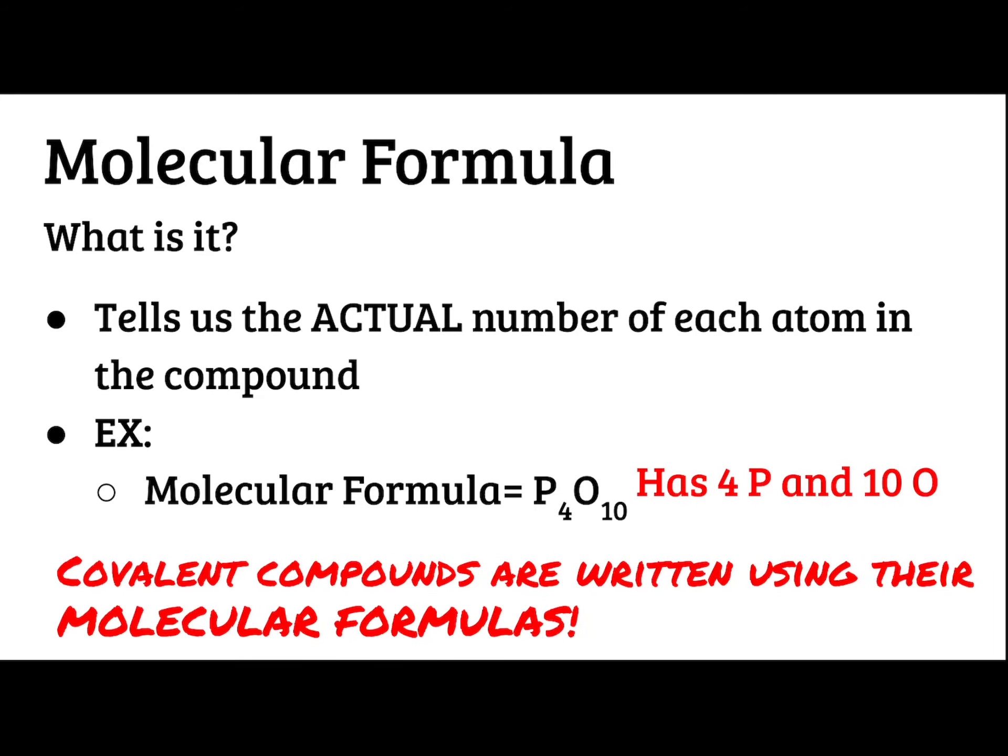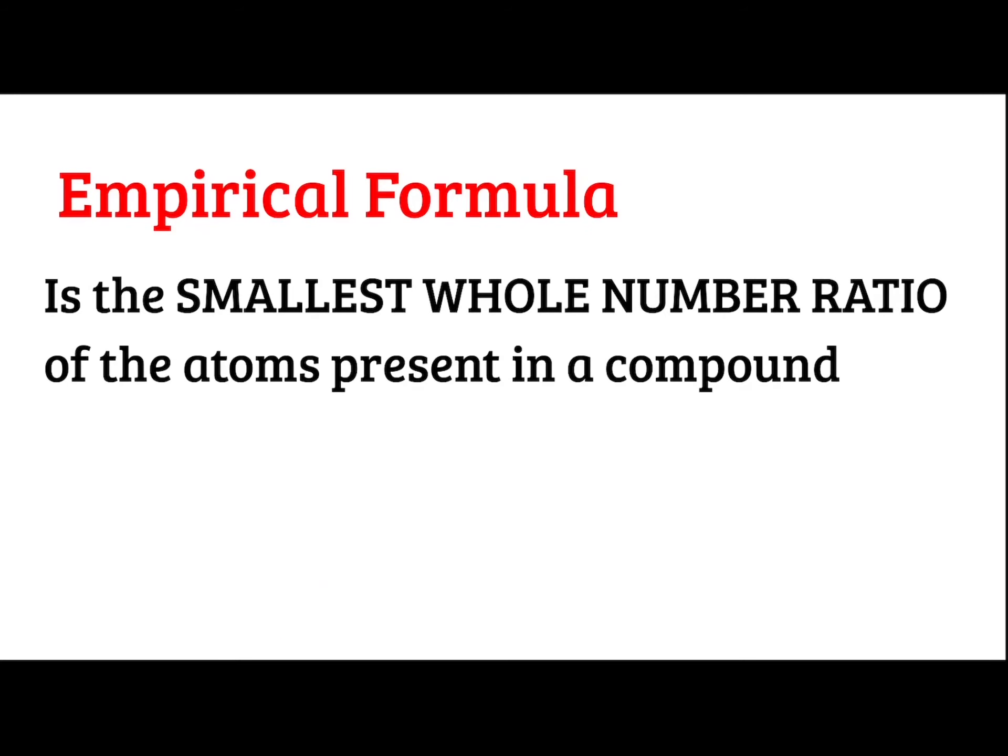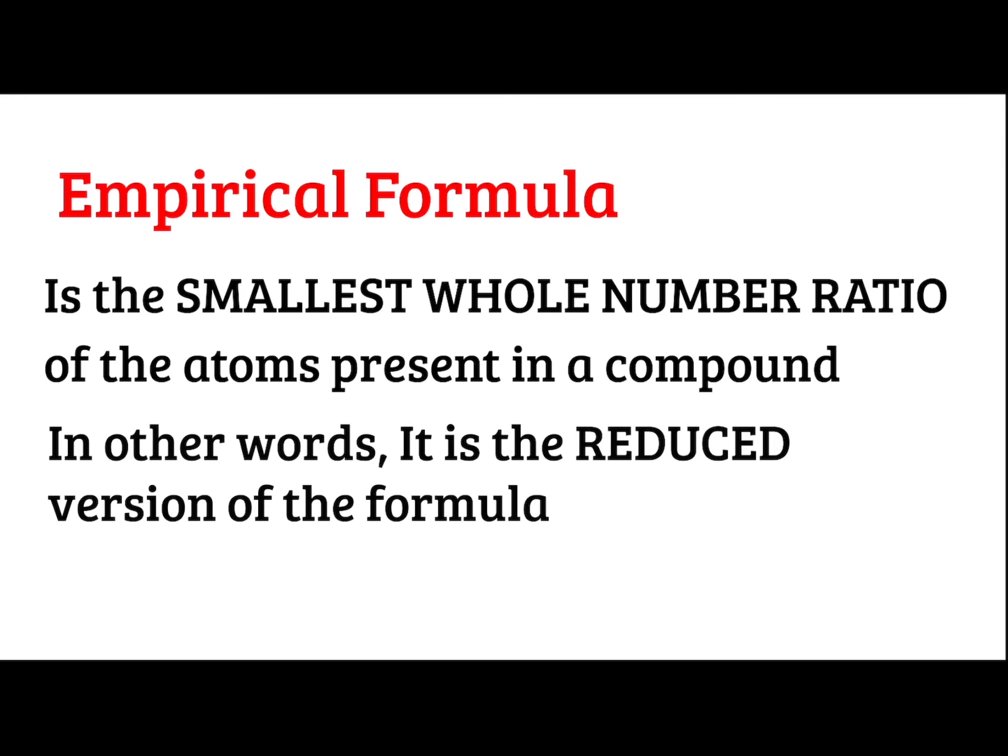Covalent compounds are written using their molecular formulas. We also have empirical formula. It is going to be the smallest whole number ratio of the atoms present in a compound. So in other words, it's going to be the reduced or simplified version of the formula.